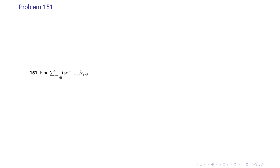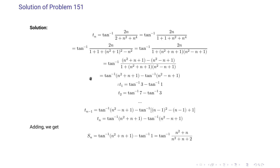Problem 151: find sigma k equals 1 to n of tan inverse of 2k divided by 2 plus k squared plus k to the power 4. So we have T_n equal to tan inverse of 2n divided by 2 plus n squared plus n to the power 4.